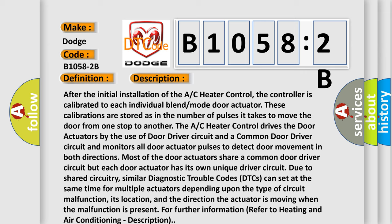Similar diagnostic trouble codes (DTCs) can set at the same time for multiple actuators depending upon the type of circuit malfunction, its location, and the direction the actuator is moving when the malfunction is present. For further information refer to heating and air conditioning description.